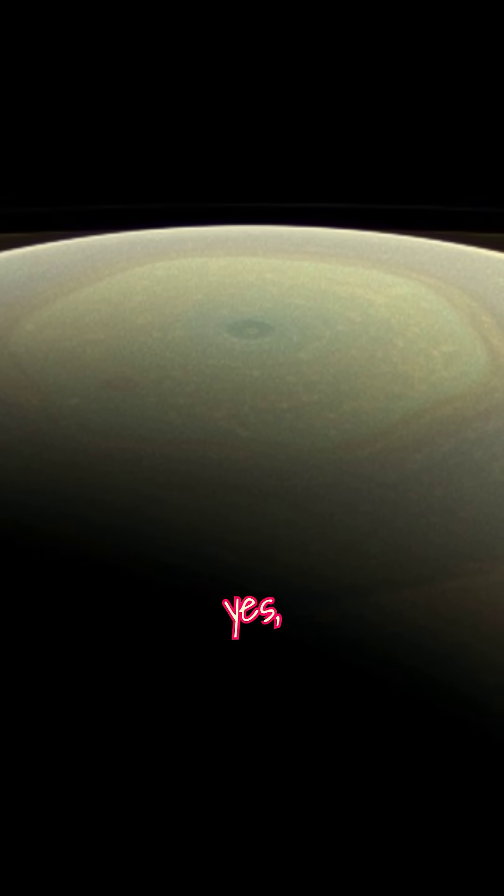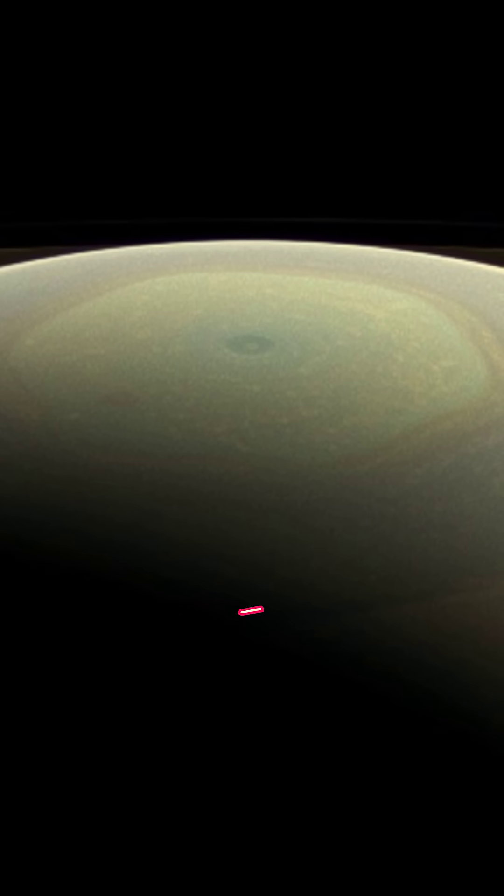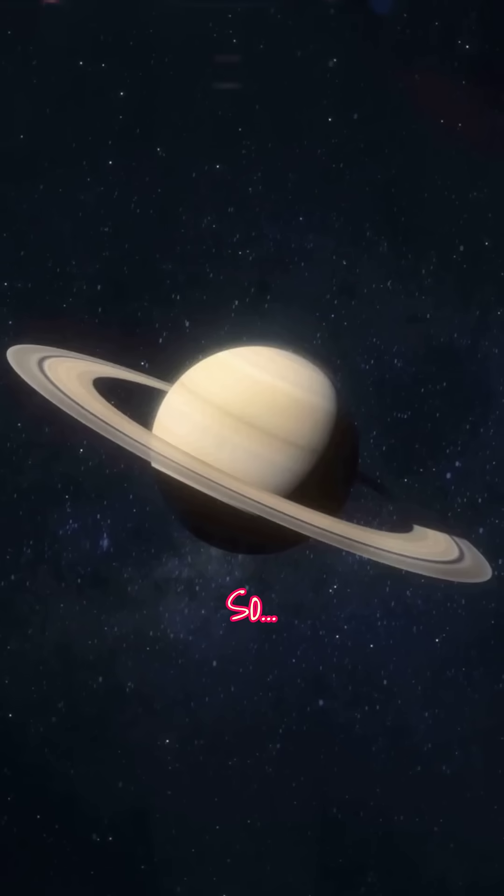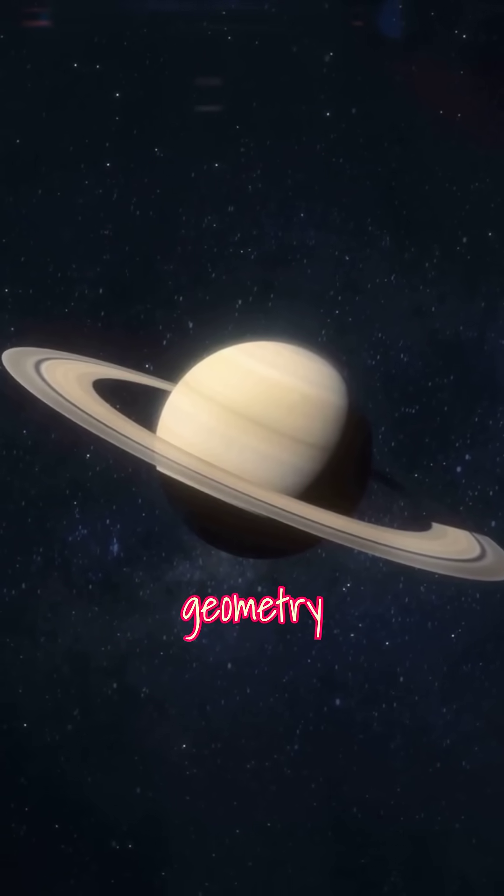And yes, it really is a six-sided shape, not a coincidence, not a trick of the light. So, how does a planet make geometry out of weather?